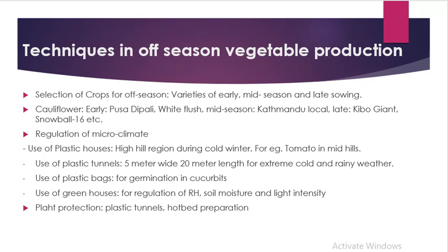Hi again. For this recording I'd like to go with two lectures in one — a very short video. The techniques in off-season vegetable production are: first, selection of crops for off-season. For the first crop, choose gurney — this company variety — or choose gurney or the mid-season sowing varieties.